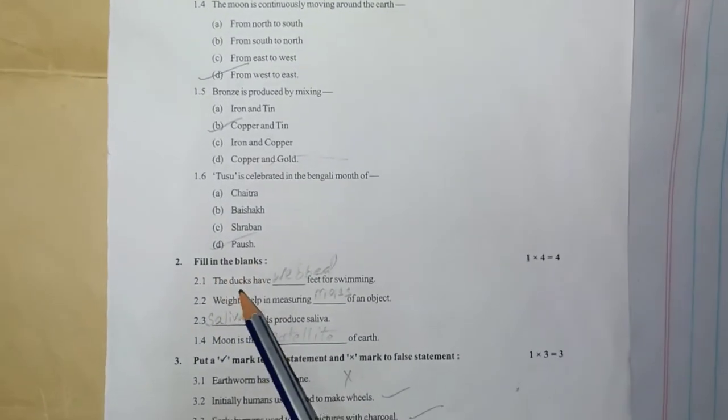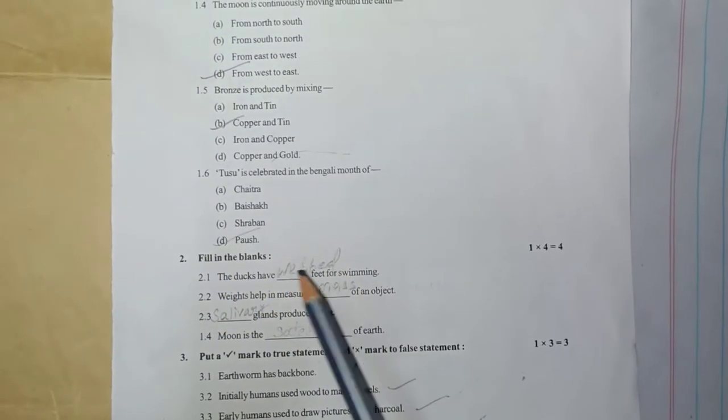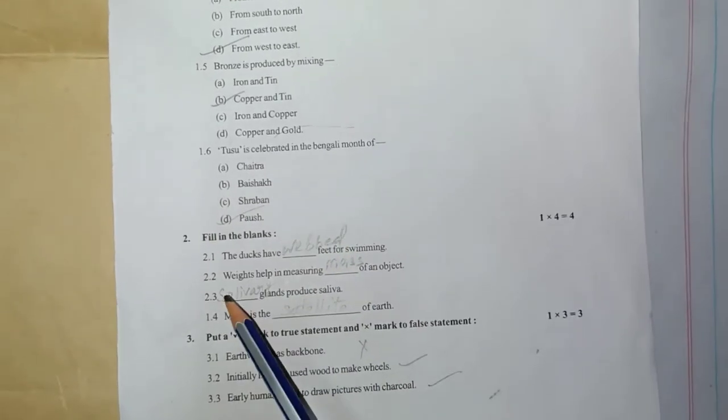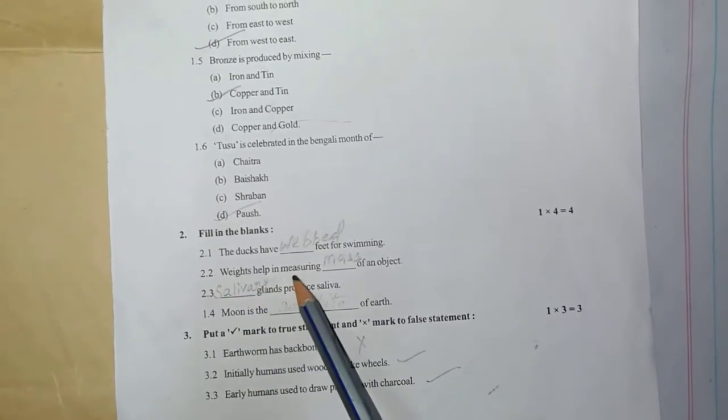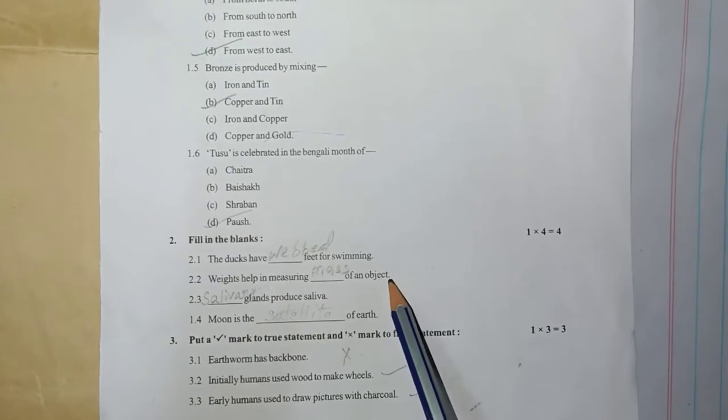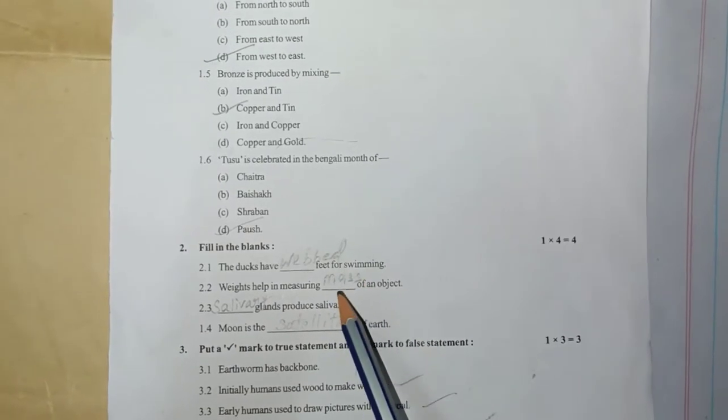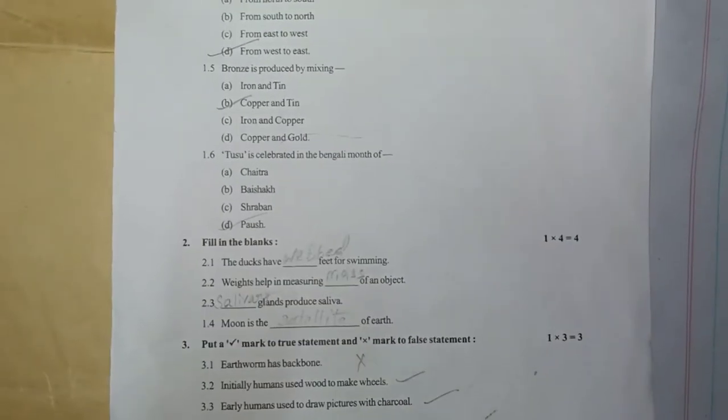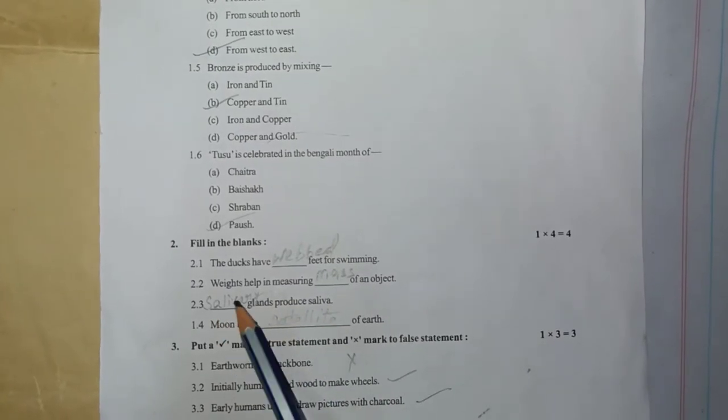Fill in the blanks. 2.1: The ducks have webbed feet for swimming. W-E-B-B-E-D, webbed. 2.2: Weight helps in measuring mass of an object. M-A-S-S, mass.